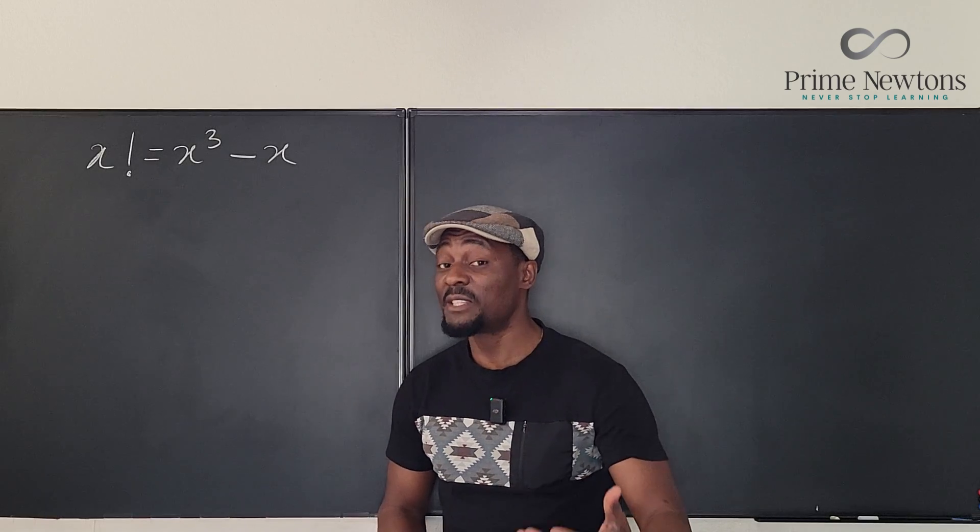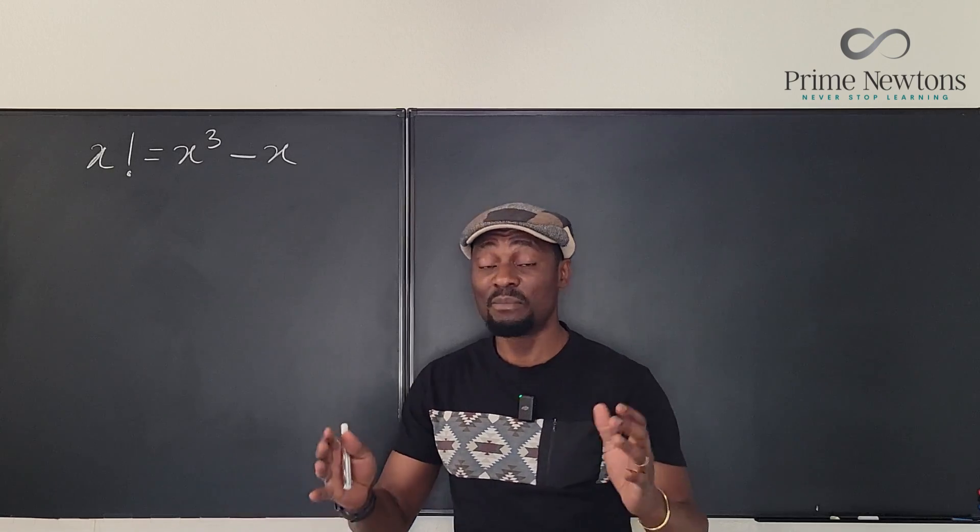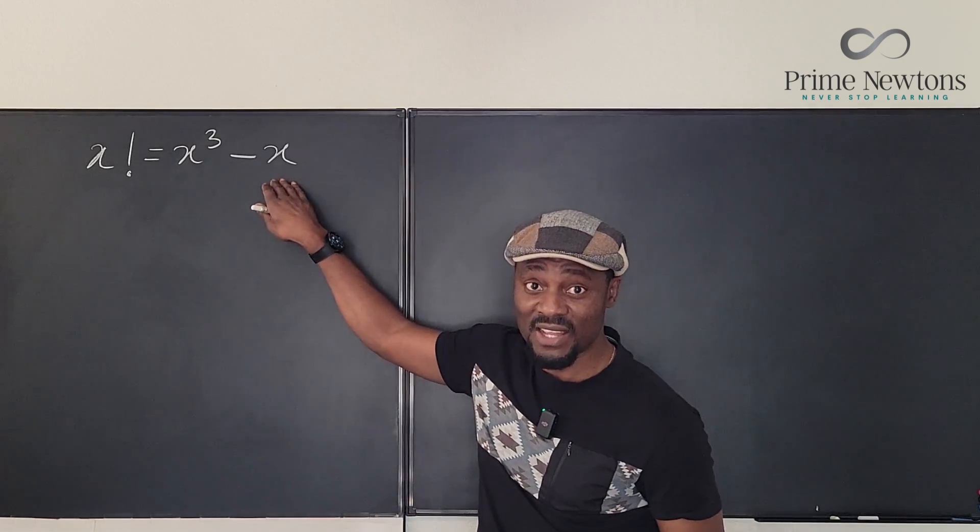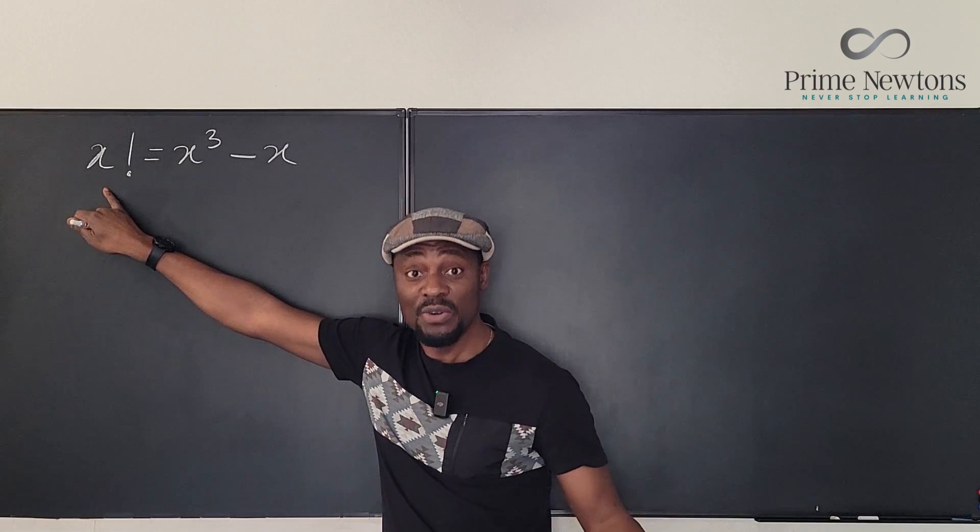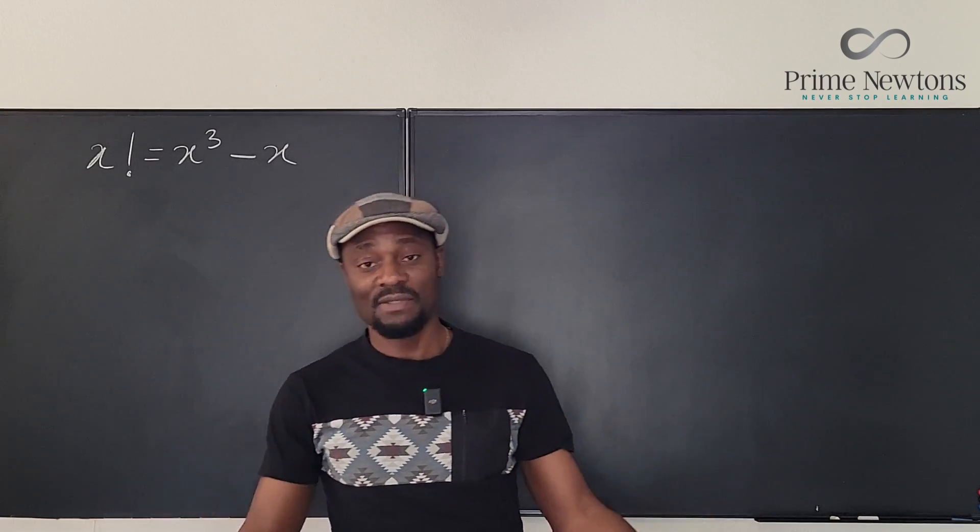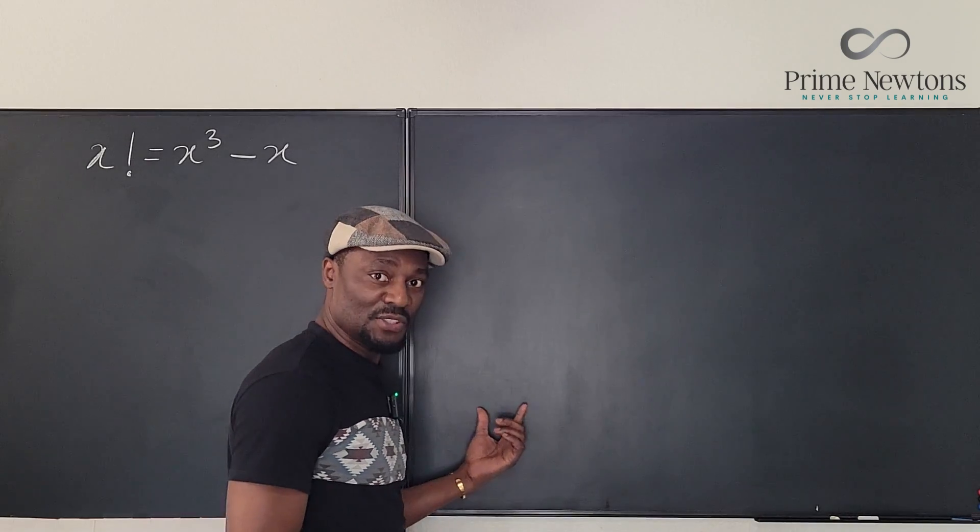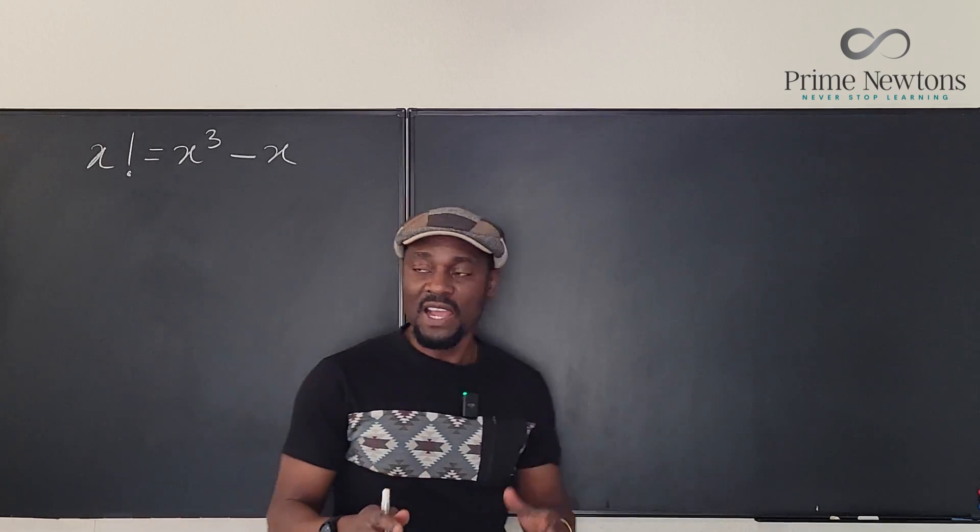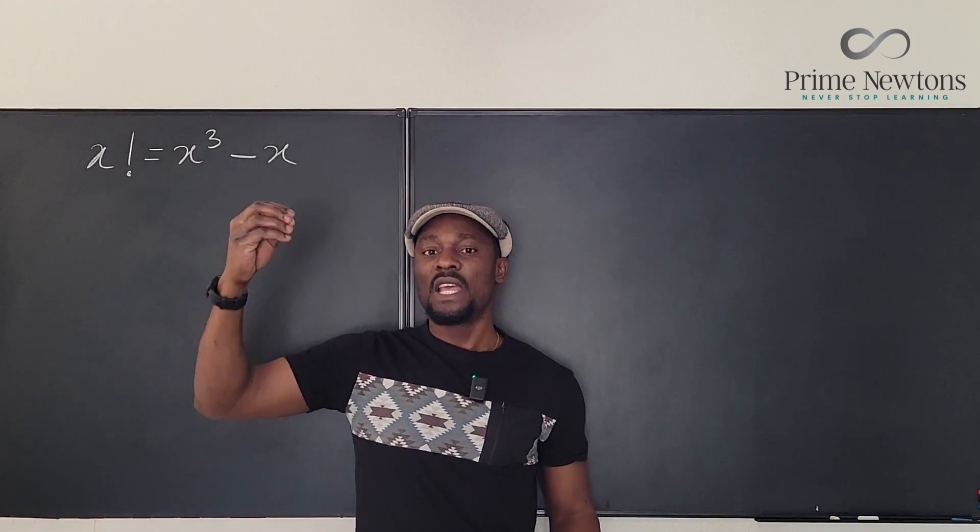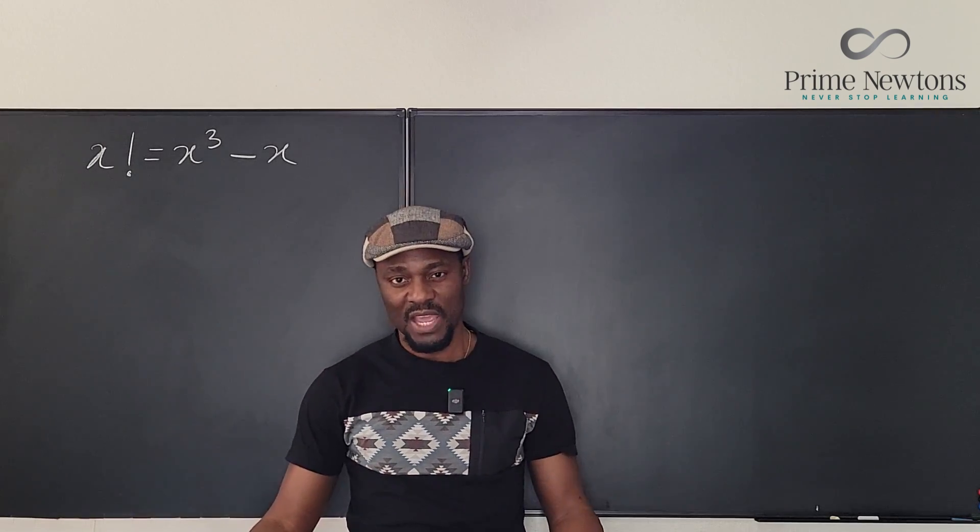So let me start by explaining the basics of this equation. It appears everybody understands the right hand side as x cubed minus x, but not everybody knows what x factorial means. So let me explain what x factorial means. x factorial just means that if x is any integer, we're going to define x for natural numbers.